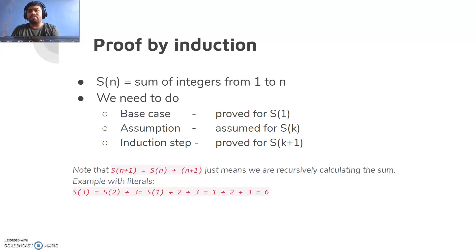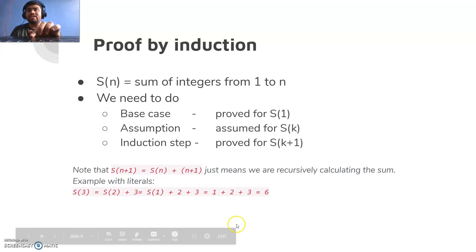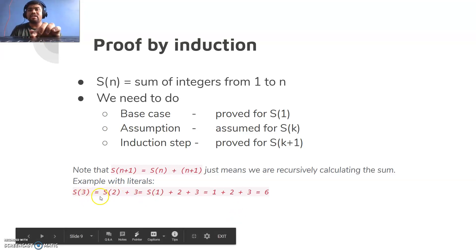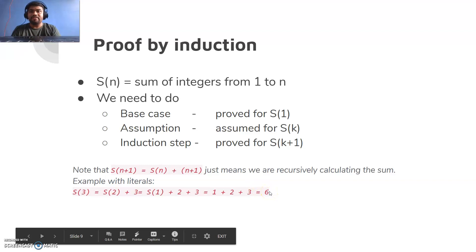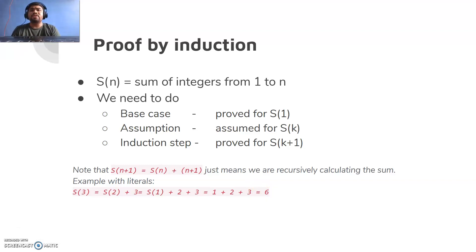Something to note: do you remember the pattern shown earlier? In that pattern you could see that s(n+1) = s(n) + (n+1). For example, s(3) = s(2) + 3, s(2) = s(1) + 2, and s(1) = 1, so finally we get the value 6. So, the proof by induction is complete: we proved the base case for s(1), assumed for s(k), and in the induction step proved it also holds for s(k+1).